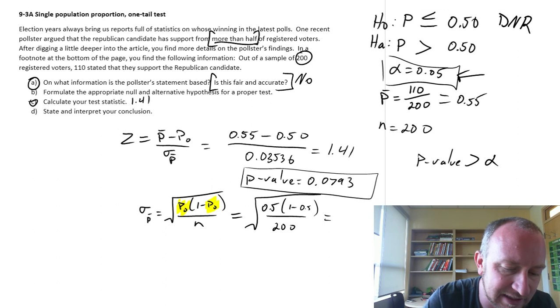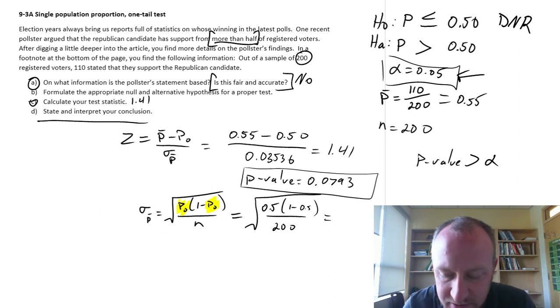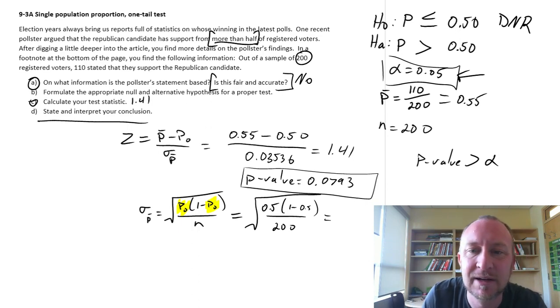Okay, good. So I think that's it. We've got our conclusion. We do not reject the null hypothesis. I am unable to say that they have more than 50% of the registered voters support. Okay, good. I hope that that all made sense. That's it. Thanks for watching. Bye-bye.